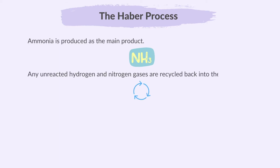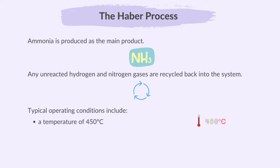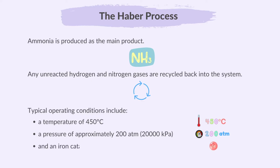Any unreacted hydrogen and nitrogen gases are recycled back into the system. Typical operating conditions include a temperature of 450 degrees Celsius, a pressure of approximately 200 atmospheres, and an iron catalyst.